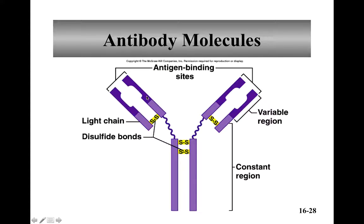Antibodies have a constant region, which is embedded in the B cell membrane or free-floating, and antigen-binding sites in the variable region. The variable region is specific for different antigens — since there are millions of different antigens, we need millions of different variable regions. For example, a Salmonella bacterium would have a different variable region than E. coli; antibodies specific to Salmonella would bind it but not E. coli.